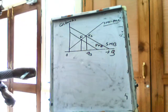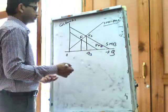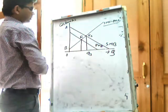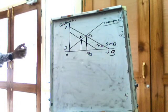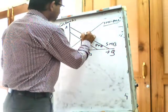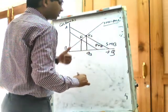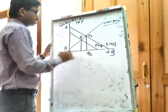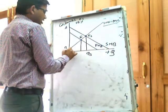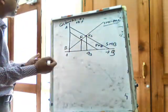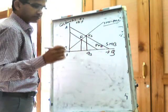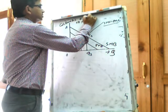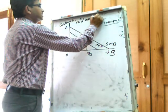Now we will find out the deadweight loss here. Initially if we consider the market equilibrium at ES, what will be the social benefit? At ES, social benefit will be represented by the area of the quadrangle O, A, ES, QS, where this is the social marginal benefit curve and output level is OQS.